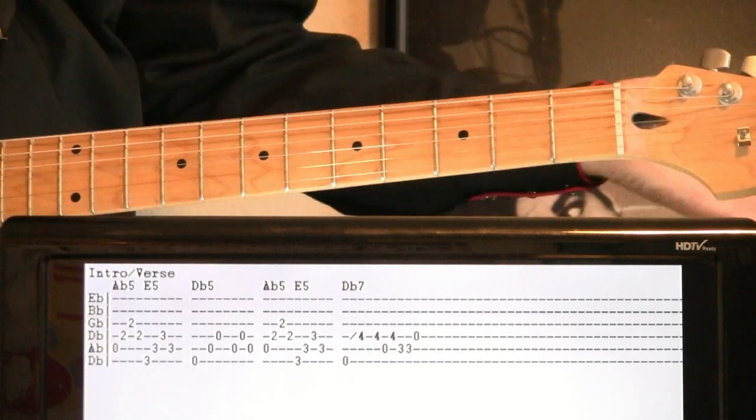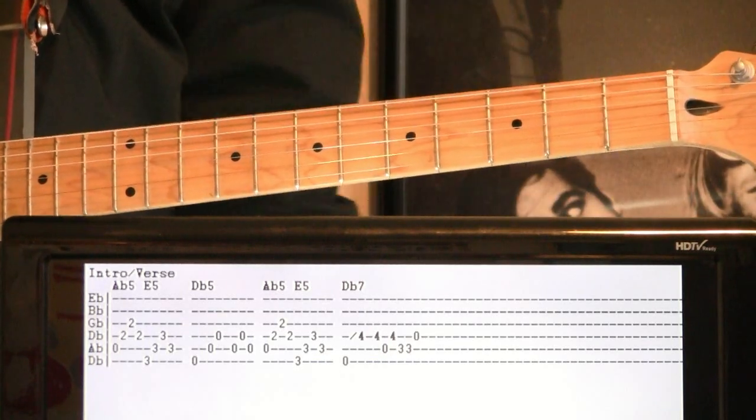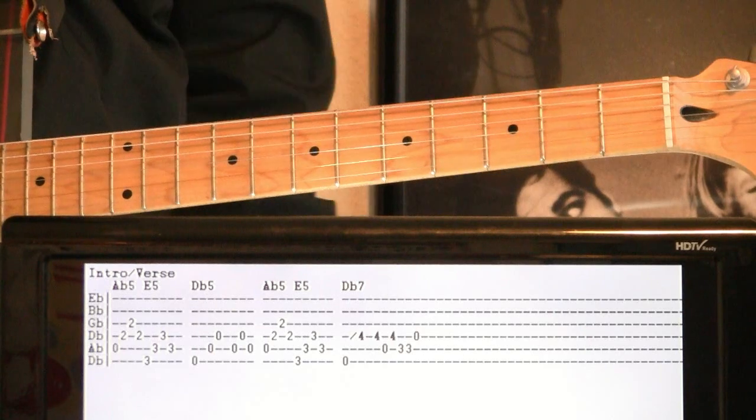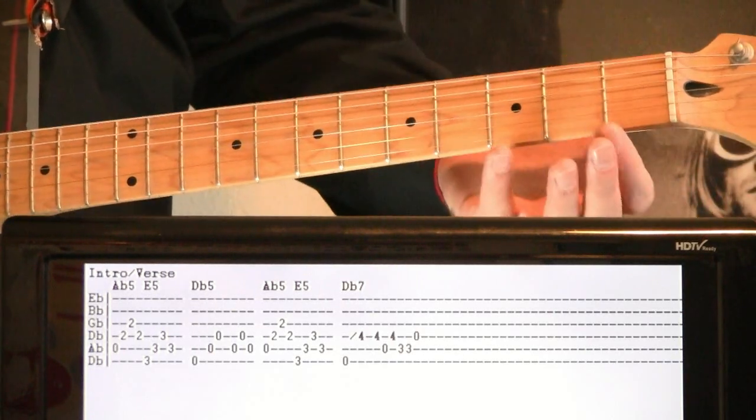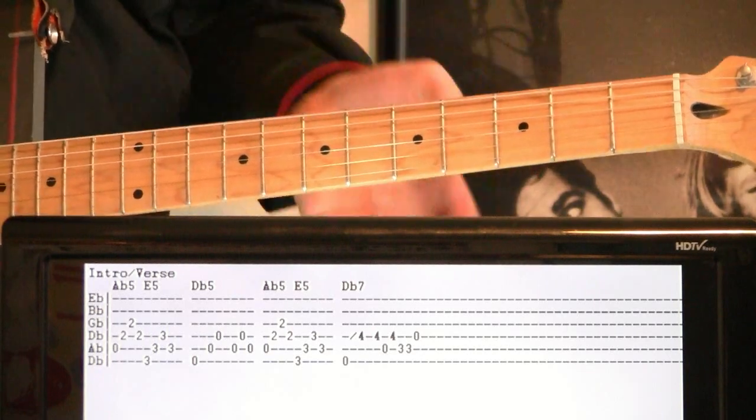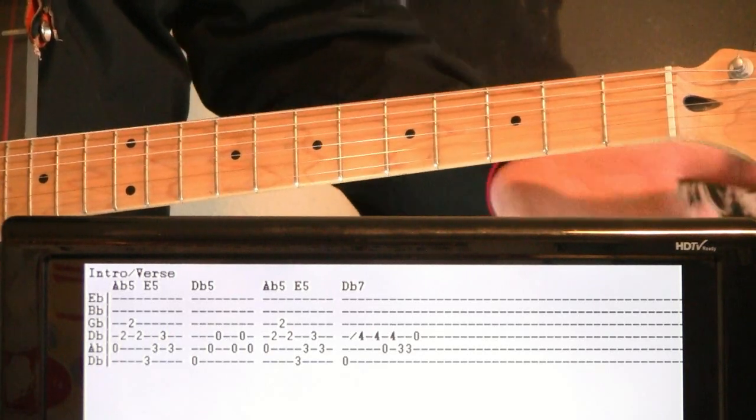Then just come off to the open, which will be a D flat, just picking through that. A little bit of different timing here - carry it a little further, hit the open low D flat, kind of hesitate a moment.